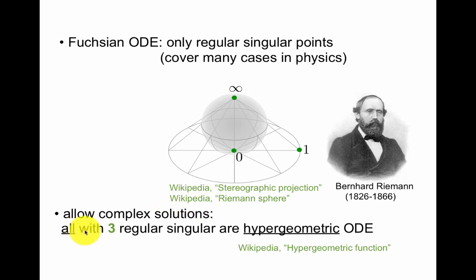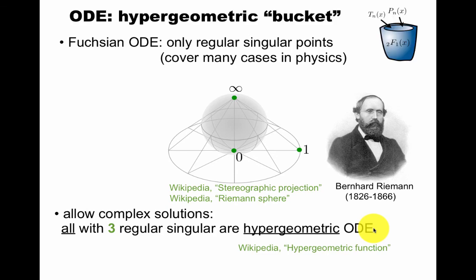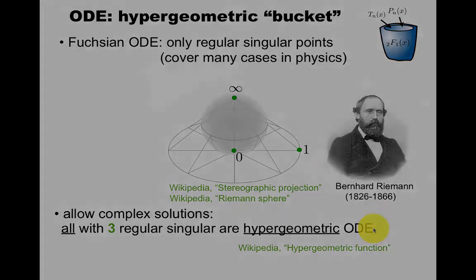We allow complex solutions. Then all with three regular singular points are called hypergeometric. So there's a standard ODE. Riemann tells you how to get to this standard ODE from a generic ODE with three regular singular points and put your regular singular points at zero, one, and infinity. Then you have an explicit expression for a solution. We'll talk more about this hypergeometric bucket in the next video.